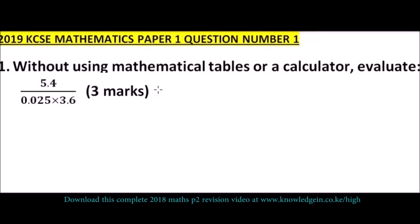Welcome to 2019 KCSE Mathematics Paper 1, question number 1. In this question, we are told, without using mathematical tables or a calculator, evaluate: 5.4 divided by 0.025 multiplied by 3.6. You get yourself 3 marks.